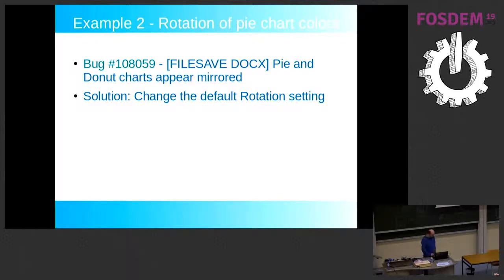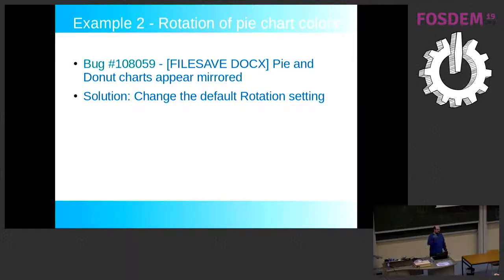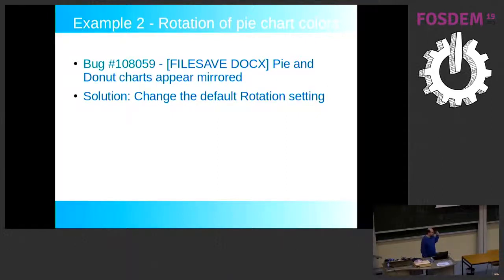Next example: pie and donut charts appear mirrored when compared to Microsoft Office. By default, LibreOffice lays out pie chart slices counterclockwise, while MS Office lays them out in clockwise order. When we try to save this in OXML, there is no option for this to be saved. So when people insert a pie chart, save it, reopen it, they see it's mirrored. They didn't do anything wrong, but it's a source of confusion. What if we just changed the default rotation setting so people would see the same result as with OXML format?